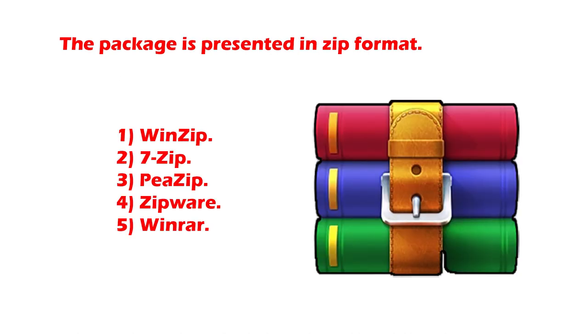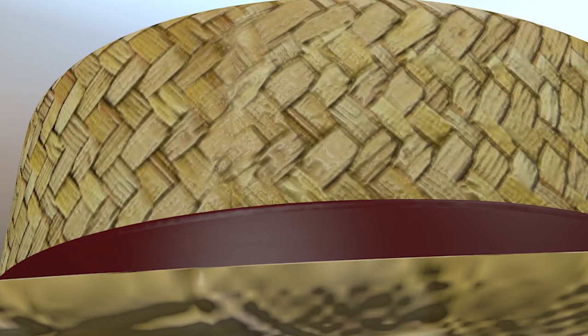The package comes in a zipped format — ZIP or RAR — and requires a program that can unzip files, which most computers already have. The models in the Boater Hat Package are already UV mapped and come with a useful bitmap template that you can use to lay out your own textures.